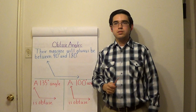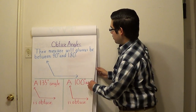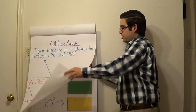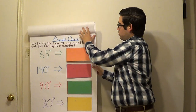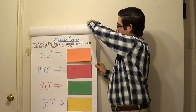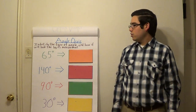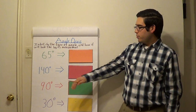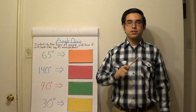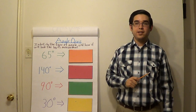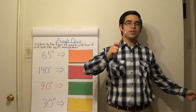Any questions? All right, let's go on. Now that we've covered the three different types of angles, I'm going to give you guys a little quiz. Don't worry, it's not for a grade — it's just for fun, just to see if you guys get it. I'm going to give you the measure of an angle, and I want you to one, give me the type of angle, and two, show me with your arms how it would look.